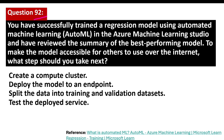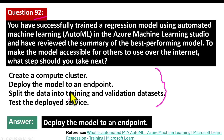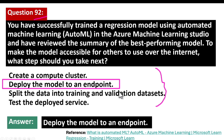Question number 92. You have successfully trained a regression model using automated machine learning (AutoML) in the Azure Machine Learning Studio and have reviewed the summary of the best performing model. To make the model accessible for others to use over the internet, what step should you take next? The correct answer is deploy the model to an endpoint.